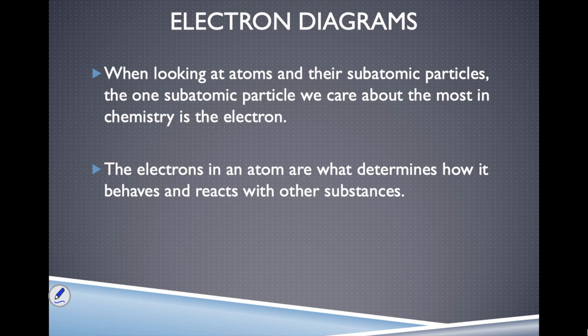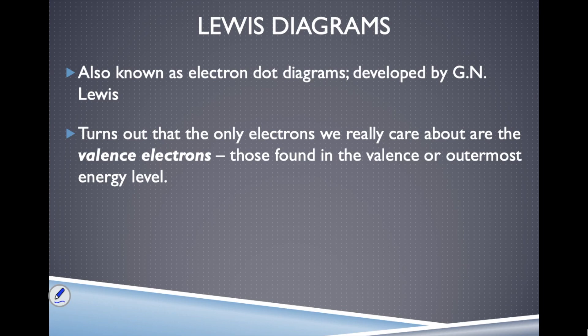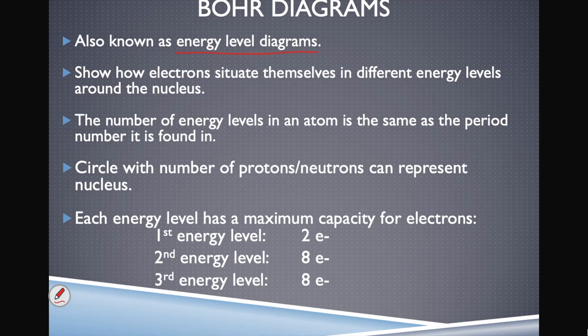We can represent the electrons in an atom two different ways: Bohr diagrams and Lewis diagrams, both named after scientists who understood electrons well. Bohr's contribution was that electrons orbit the nucleus in energy levels, so Bohr diagrams are energy level diagrams.